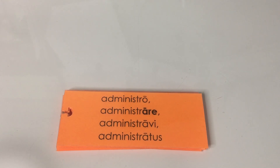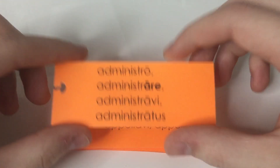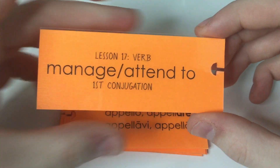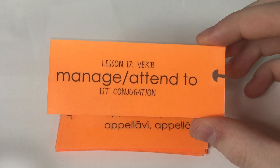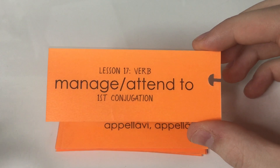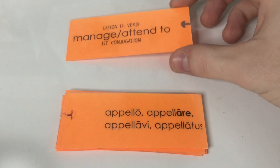Our first word is administro, administrare, administravi, administratus. For this word, I like to think of what an administrator is. What does an administrator do at a party or something like that? An administrator manages or attends to the things that are going on, the events. So that's how I like to remember this word — administro means manage or attend to.